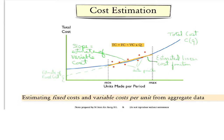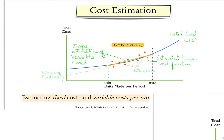From the linear cost function, we will get the slope, which is our estimate of variable costs, and an intercept, which is our estimate of the fixed costs.